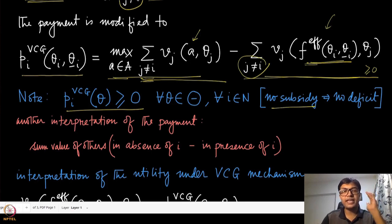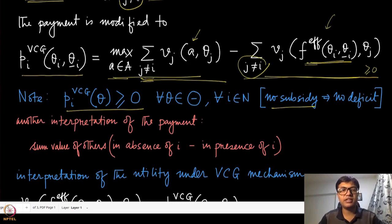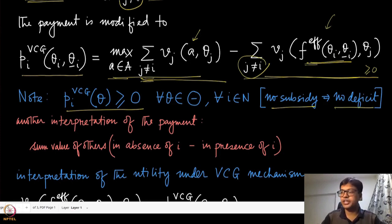Because it is no-subsidy — meaning agents either make positive payments or zero payments, but the mechanism never pays any agent — this automatically implies no-deficit as well, since the sum of all non-negative payments is also non-negative.